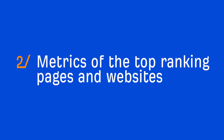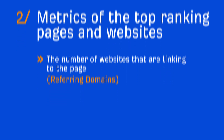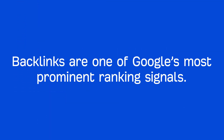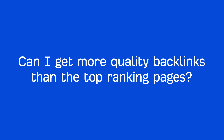The first metric to look at is the number of websites that are linking to the page. At Ahrefs, we call this referring domains. As I mentioned in module 1, backlinks are one of Google's most prominent ranking signals. So if a page has a lot of quality links pointing at it, then it'll be more competitive to rank. Before choosing a keyword, you need to ask yourself: can I get more quality backlinks than the top ranking pages?